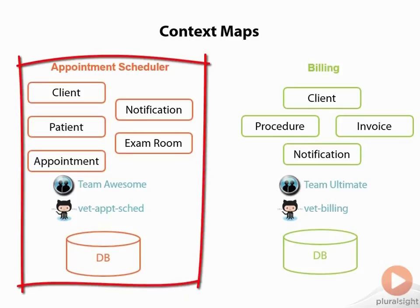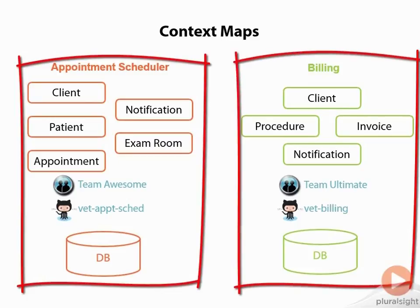For instance, on the left, we have an appointment scheduler application. It's being worked on by Team Awesome, and they're storing all of their code in their own repository called Vet Appointment Sked, and of course this application has its own database. This team is free to change anything they want with their model, or any other part of their system, without worrying about breaking anything outside the boundaries. The team on the right is working on a billing system, and their team has decided to call themselves Team Ultimate, store their code in a repository called Vet-Billing, and of course using their own database. By having this separation, this can greatly increase team velocity and reduce integration bugs.